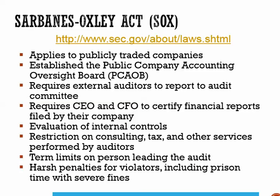Back in the early 2000s and late 1990s, there was a lot of fraud going on in some very large companies that impacted a lot of people. You may have heard of Enron, WorldCom, and Tyco — all of those companies were reporting inaccurate financial information. In response, the United States enacted the Sarbanes-Oxley Act in 2002, also referred to as SOX or Sarbox. It applies only to publicly traded companies and established the Public Company Accounting Oversight Board, or PCAOB — a private non-profit corporation that oversees the auditors of public companies.